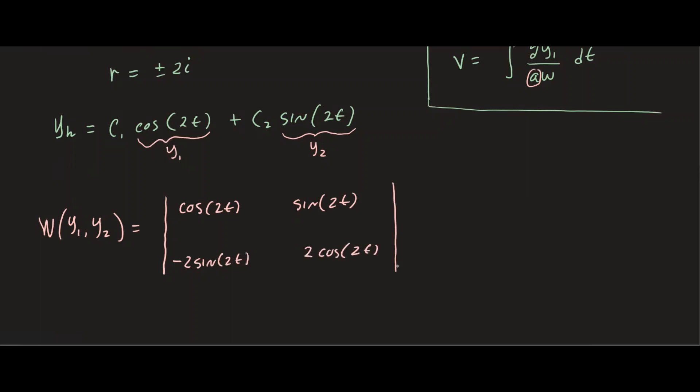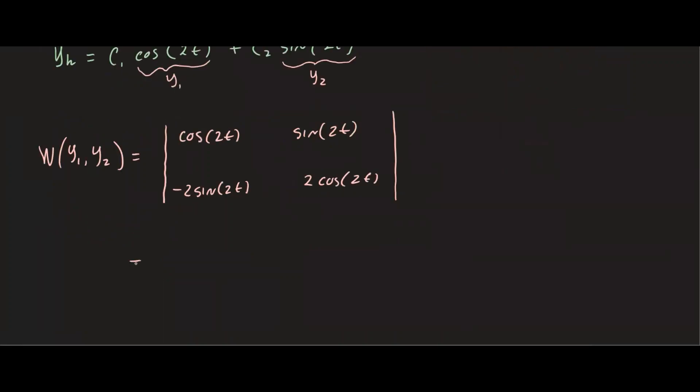That will be the setup for the Wronskian. Now we find the determinant of this. We have 2 cosine squared 2t plus 2 sine squared 2t. And we know that is going to equal 2 because if you factor out a 2, you'll be left with cosine squared 2t plus sine squared 2t, which is simply 1 from trig identity.